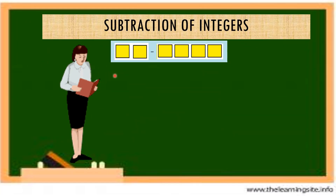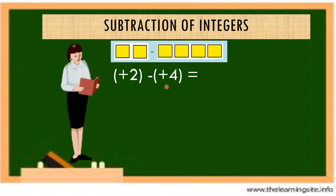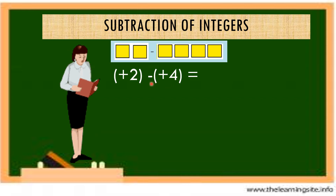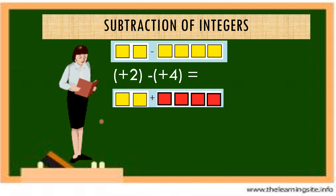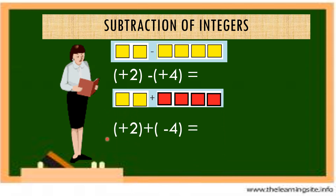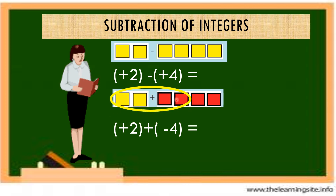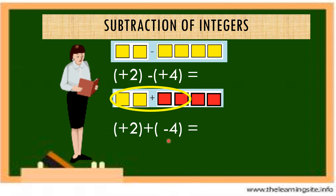Next example: positive 2 minus positive 4. We change the sign of the subtrahend and proceed to addition, giving positive 2 plus negative 4. Since 2 plus negative 2 is 0, the result is negative 2.